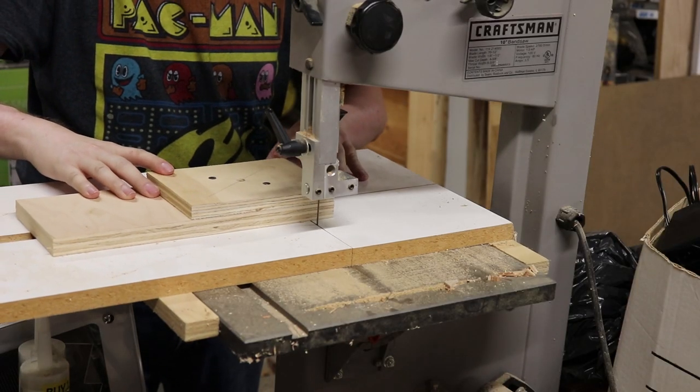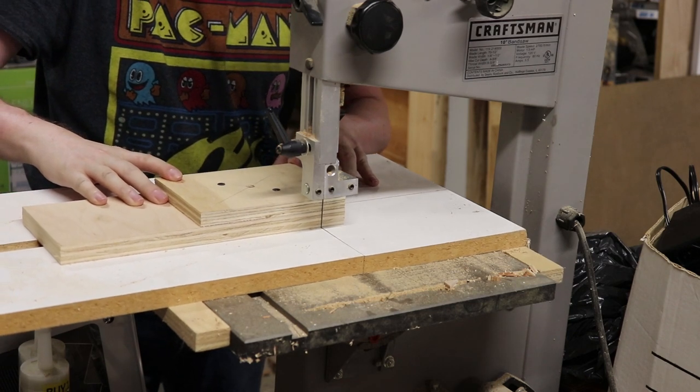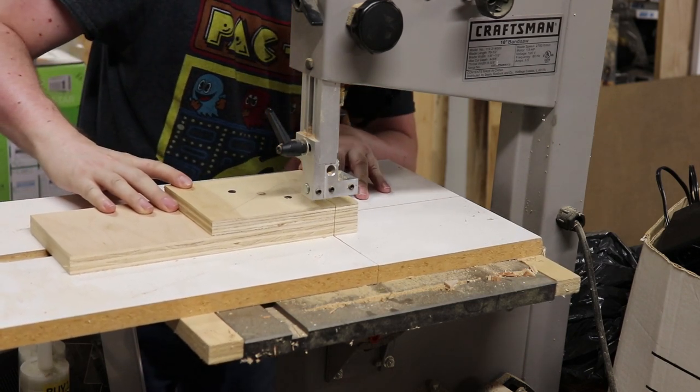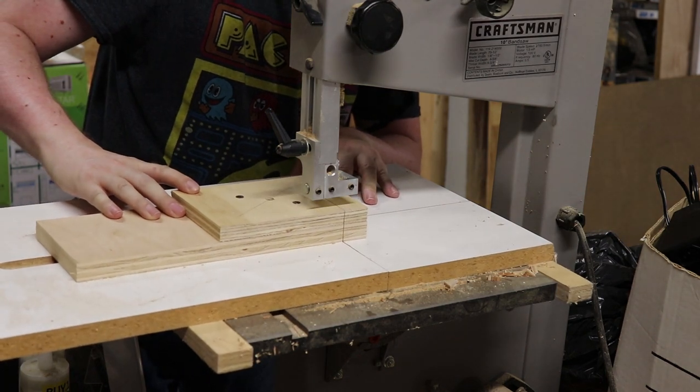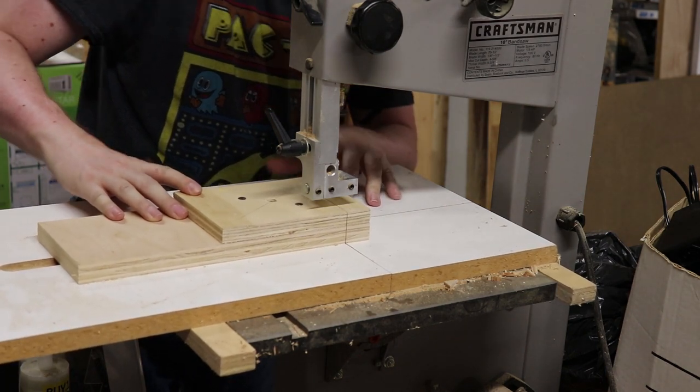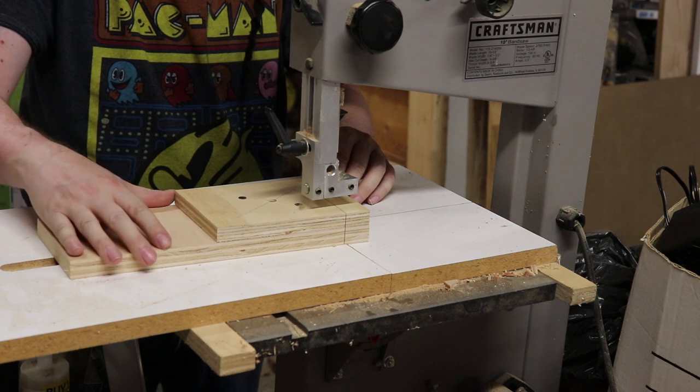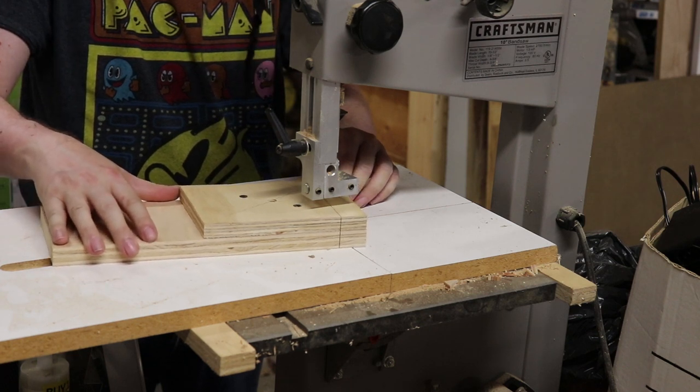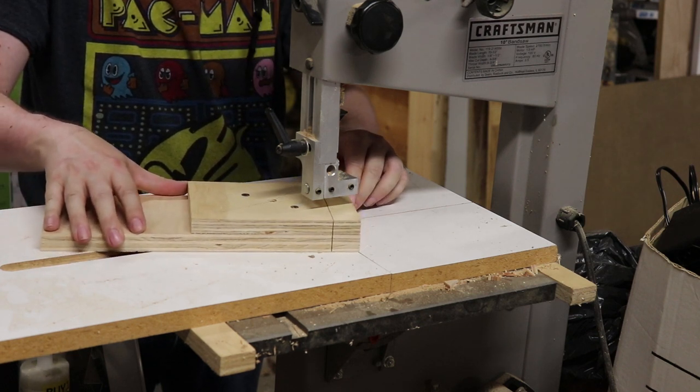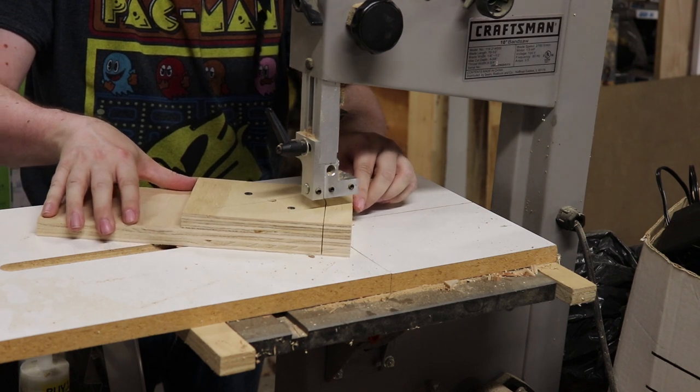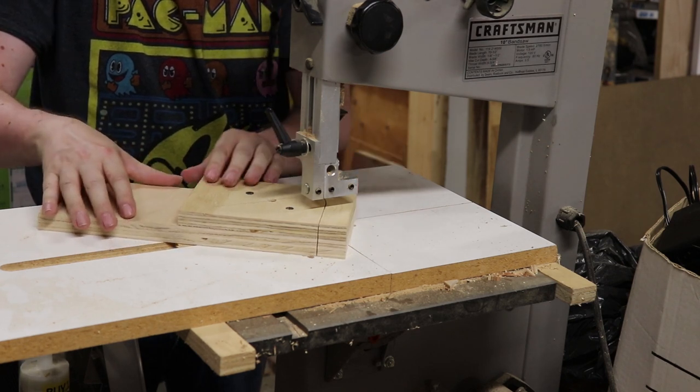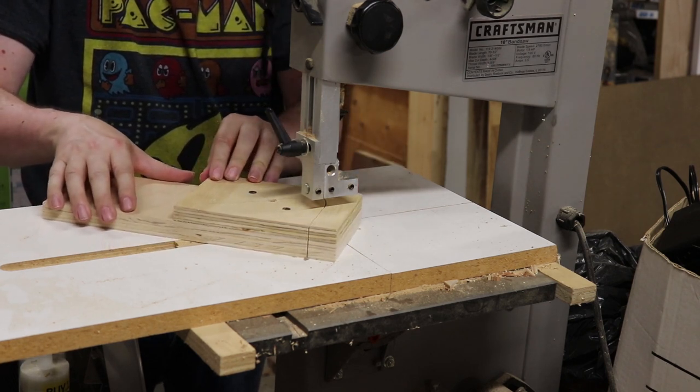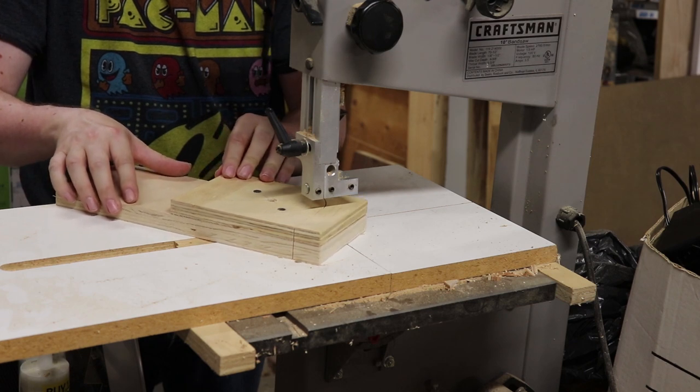I made this circle cutting jig a long time ago. It's just a scrap of particle board that has melamine on one side and I cut a slot down it where I have a movable pin. For this project I replaced the pin with the bolt that I'm going to be using. I put the wood over the bolt to use as a pivot and then I slide the whole thing into the bandsaw until the blade is about center with the bolt, and then I can turn the wood and cut a circle.